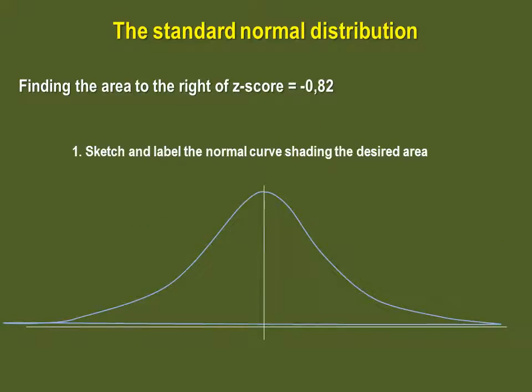But what if we're looking for an area to the right of a Z-score? Let's try with a Z-score of minus 0.82. We must first sketch what we're looking for. We have to identify where according to the mean our Z-score is. Because this is negative, our Z-score will be to the left of the mean. So we're looking for the area on the right of that Z-score, like so.